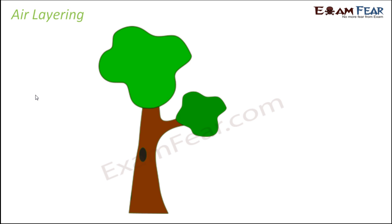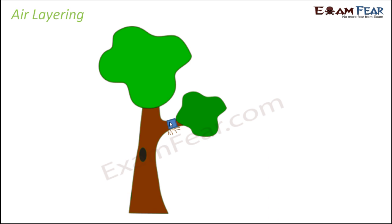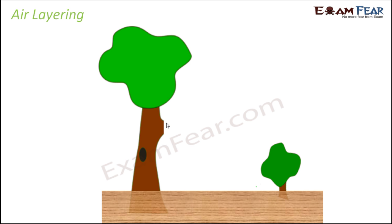In air layering, you take a part of the plant and cover it with a wet cloth, making sure the cloth stays wet. Over a period of time, roots start developing from that part, because the bandaged section receives soil, water, and all the nutrients needed for growth. Gradually roots develop, and when the branch has grown a little, you cut it and separate it. So initially the branch stays attached to the parent plant, but once it starts growing you separate it to get a new plant.